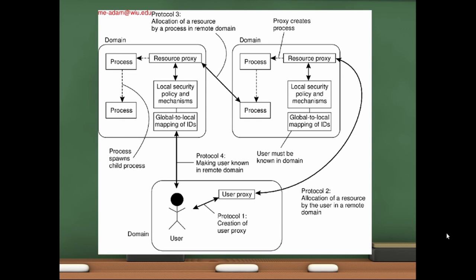As just mentioned, it's very important to understand that distributed systems take care of policy only for inter-domain communication — they do not handle local security policy for a certain domain. Here we have an example with three domains, each having its own local security policy, which is not governed by the distributed system's security policy.